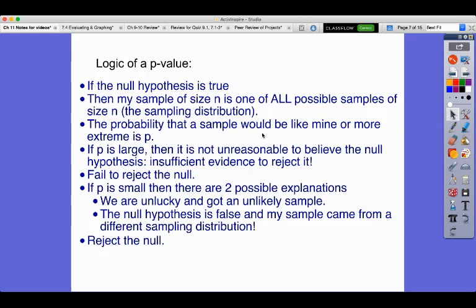So that's the idea of the logic behind a P value. And really it's the probability that a sample would be like mine or more extreme. I have a sample. What's the probability that someone else would get a sample like mine or more extreme? Because samples like mine, if they're unusual, maybe it's because someone's lying to me. So good luck.